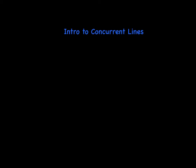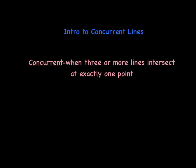In this video, we're going to talk a little about concurrent lines, so it's a little introduction to concurrent lines. So first things first, we have to talk about what it means for things to be concurrent. The word concurrent is defined as when three or more lines intersect at exactly one point. That point has a specific name, that point is called the point of concurrency.